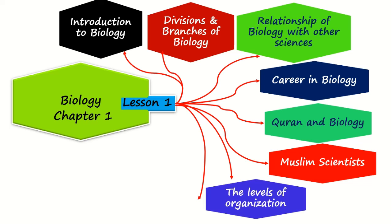Tissue levels, organ levels, organ system levels, then individual levels, then population levels, then community levels, then the biosphere. These are the different levels of biological organization.